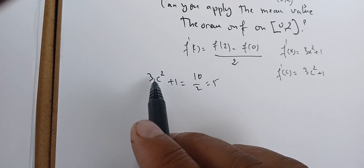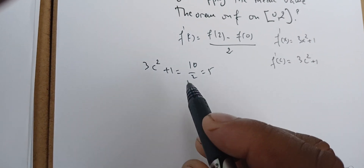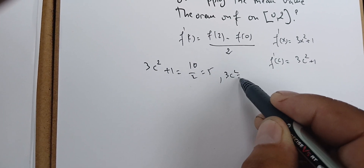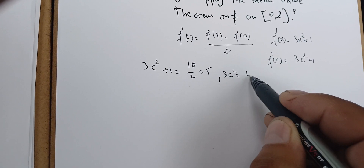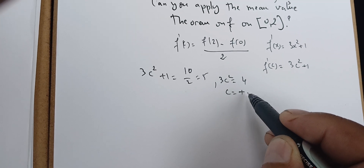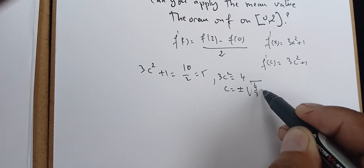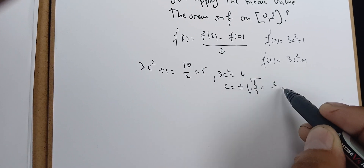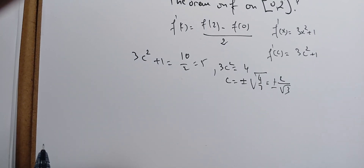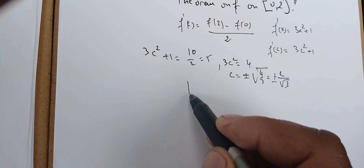Now we can solve for c. We have 3c² + 1 = 5, so 3c² = 4, therefore c = ±√(4/3) = ±2/√3. We found c. Now we consider which value belongs to the interval [0, 2].